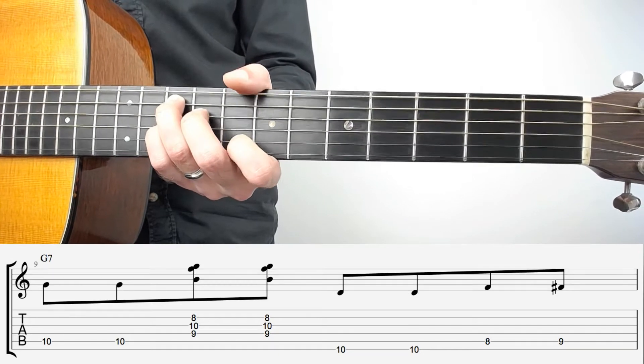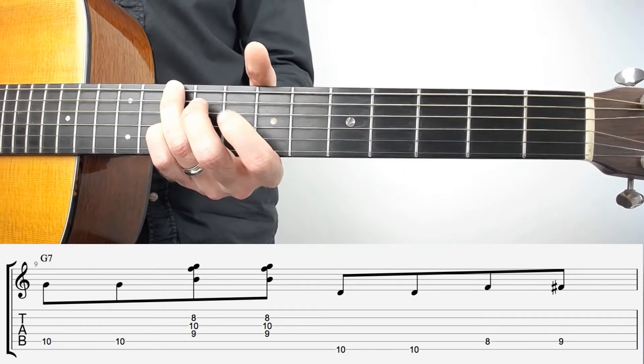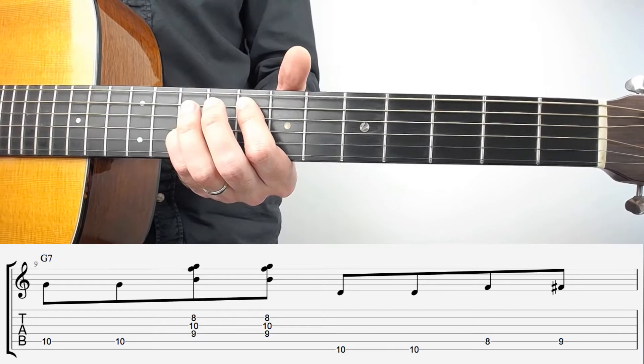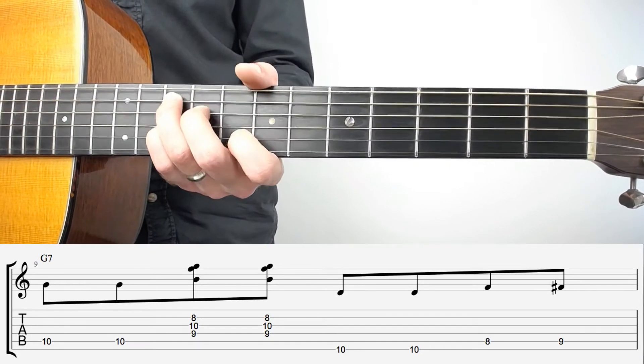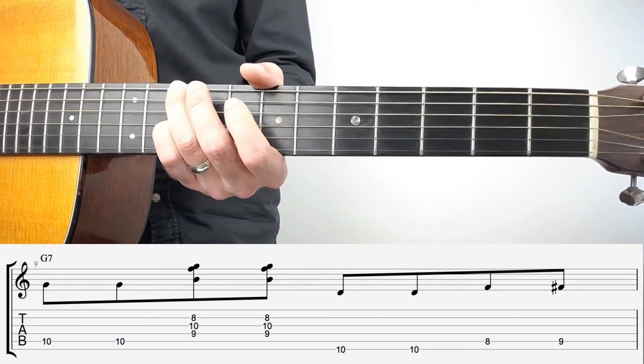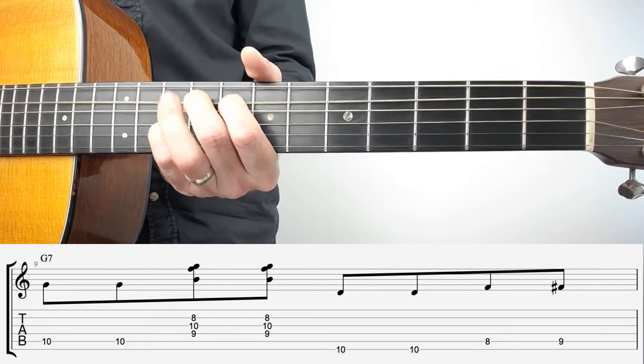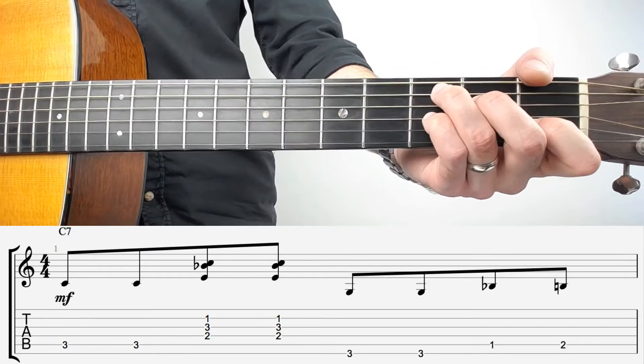You go 10, 10, strum strum strum, 10 on the E, then 8 on the A, 9 on the A. And that's the three shapes - obviously C7 being the first one, and F7 and G7 being the next two.